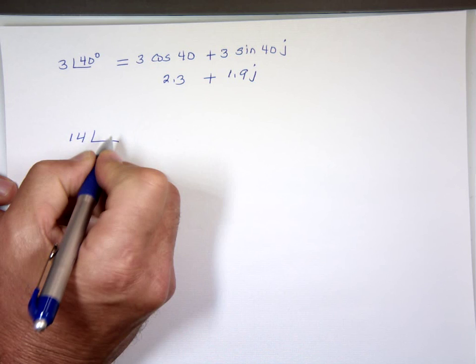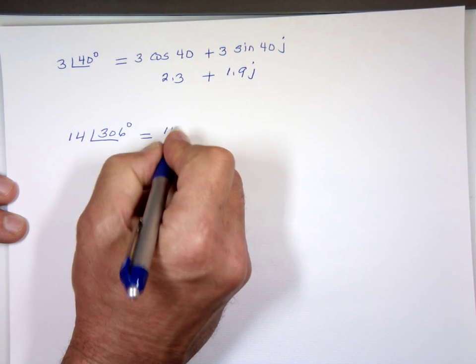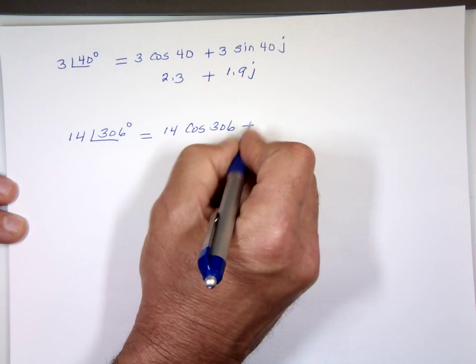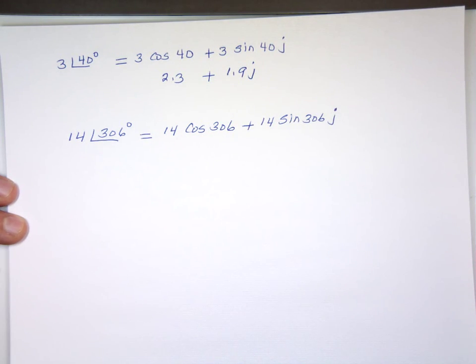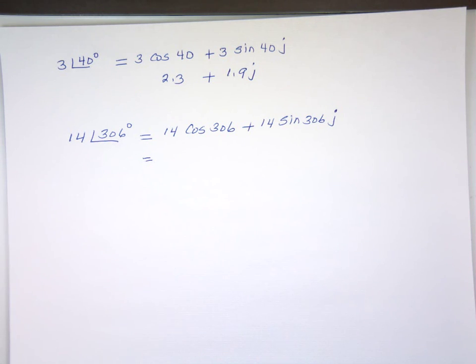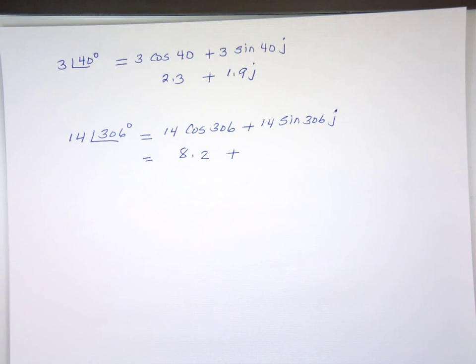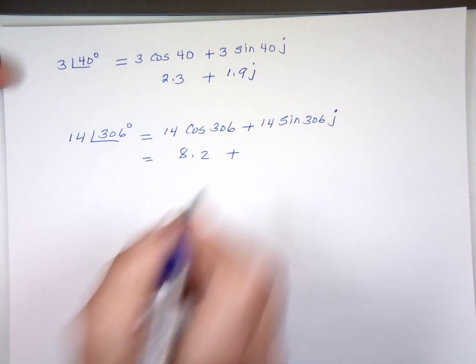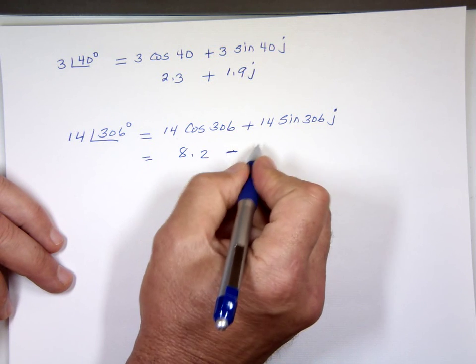14 angle 306, and I want to change it to rectangular. That's 14 cosine 306, plus 14 sine 306, and that's the imaginary portion, J. 14 cosine 306 equals 8.2, 14 sine 306, negative, instead of plus, that's a negative. Now, where's my negative? Nope, there we go. Negative 11.3 J.